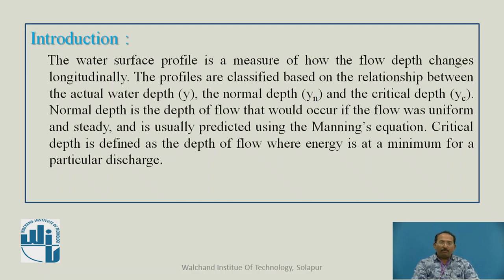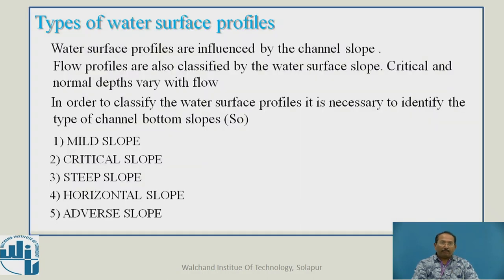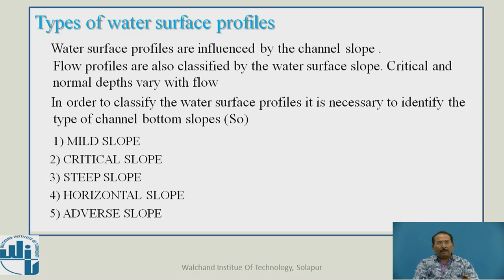Critical depth is defined as the depth of flow where energy is at minimum for a particular discharge. Relating Yn and Yc, different water surface profiles are classified. There are five slope types: mild, critical, steep, horizontal, and adverse. All five slopes are defined on the basis of the relationship between Yn and Yc.